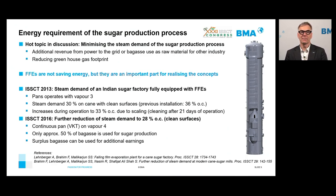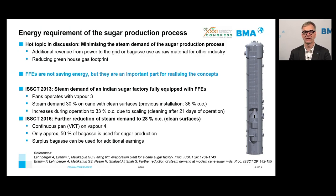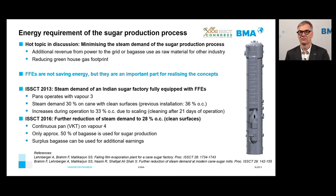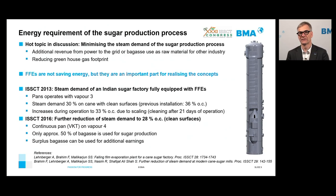Ten years ago, we published at the ISSCT conference a paper showing the steam demand of an Indian sugar factory fully equipped with Falling Film Evaporators. That factory operated the pans with vapor from effect 3. As a result, steam demand was 30% on cane with clean surfaces, compared to a previous demand of 36% on cane — a reduction of 20%. After three weeks of operation, steam demand increased to 33% on cane due to scale buildup.